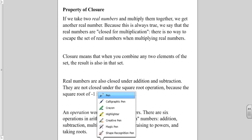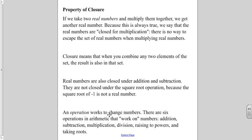In this video, we are looking at the property of closure. With the property of closure, it says if we take two real numbers and multiply them together, we get another real number. Because this is always true, we say that the real numbers are closed for multiplication.